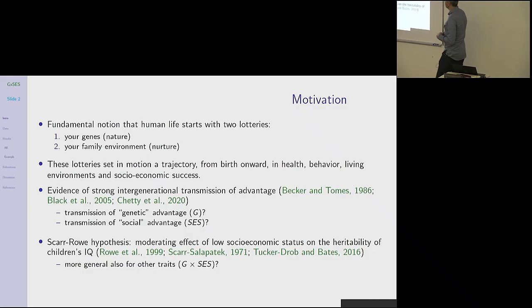And that relates to equality of opportunity, because your genes and your family, there's nothing about that that you deserve. And then there's also evidence of strong intergenerational transmission of advantage. Then there is also this notion that there might be gene by socioeconomic status, family socioeconomic status interactions.